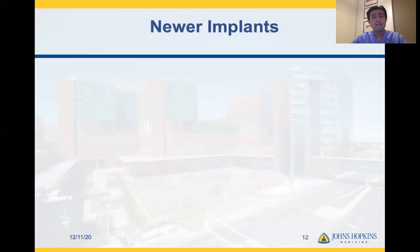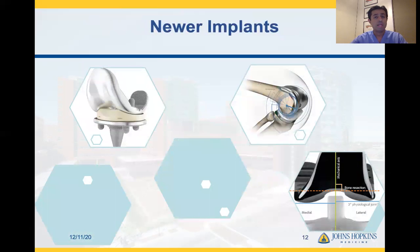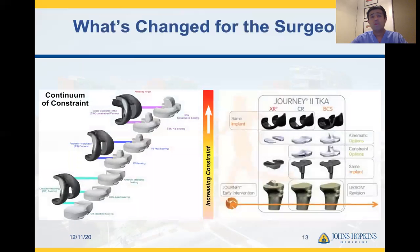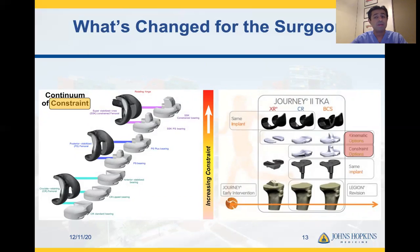Newer implants also exist in order to try and preserve kinematics. Rotating platform designs, medial pivot designs, and asymmetric designs are some of them. In addition, we also have designs that can maintain both the cruciate ligaments and multi-compartmental or unicompartmental arthroplasty. So what has changed for the surgeon? Initially, we would only think about the continuum of constraint from the least to the most constrained prosthesis, but now we also have the ability to think about kinematic options in addition to constraint options for patients.